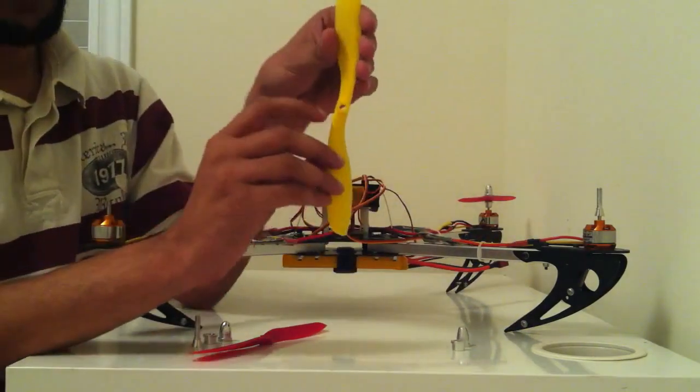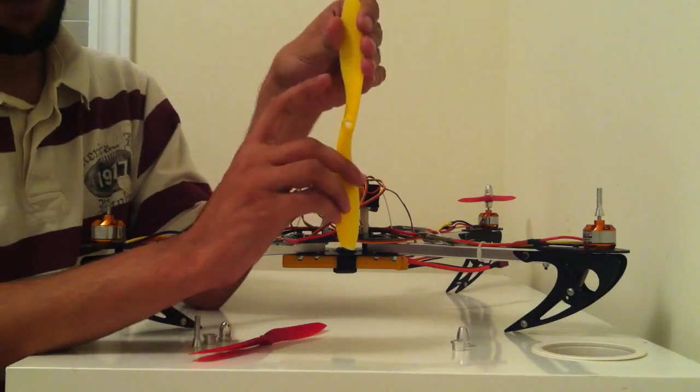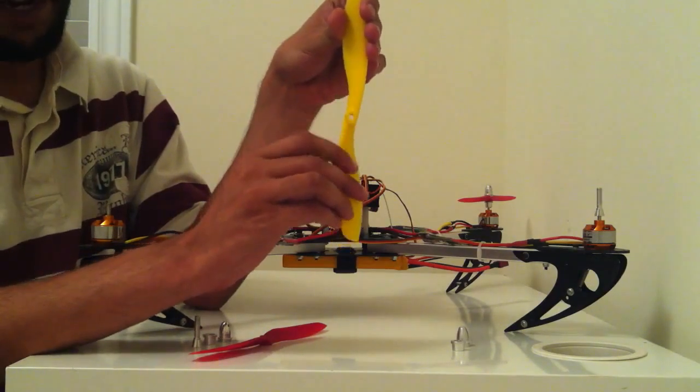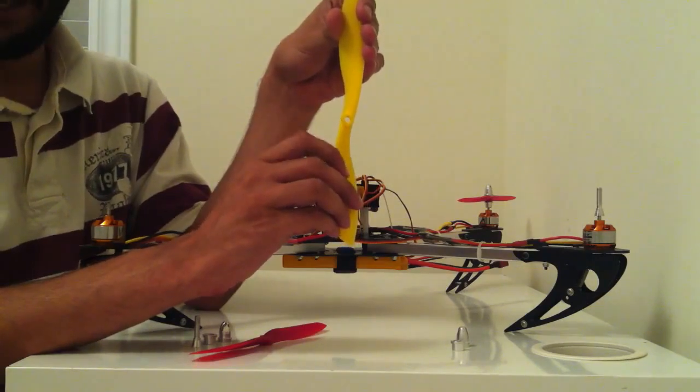A really simple way to tell which prop is clockwise and which prop is counterclockwise is that your clockwise prop will have its top bridge pointing to the right, whereas your counterclockwise prop will have its top bridge pointing to the left.